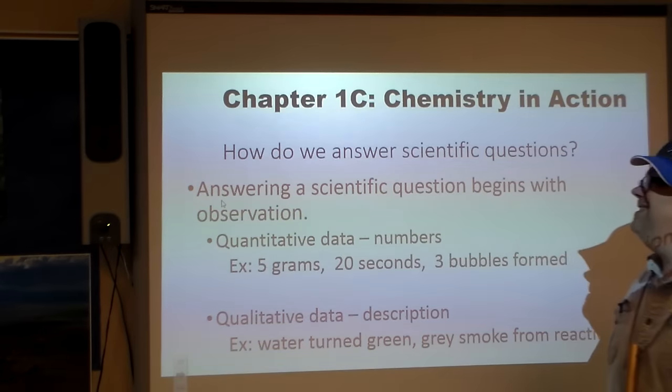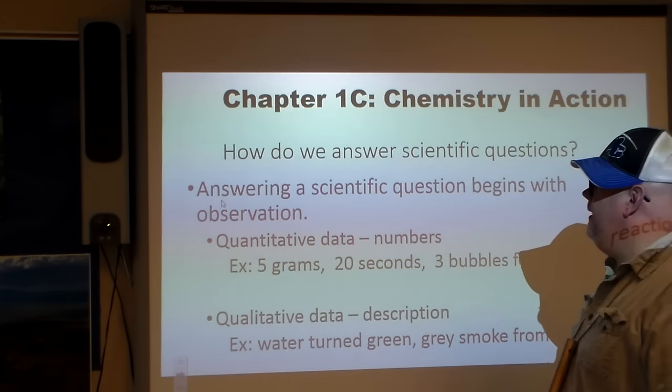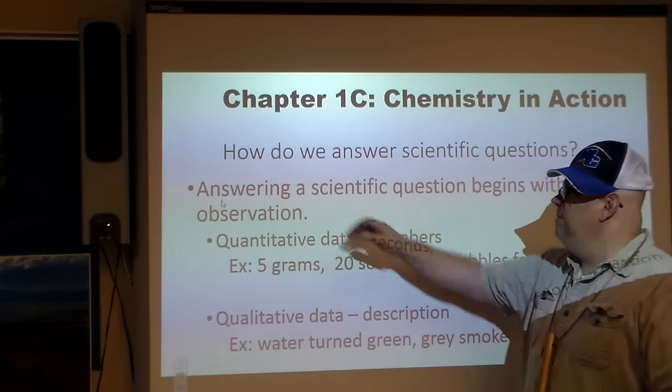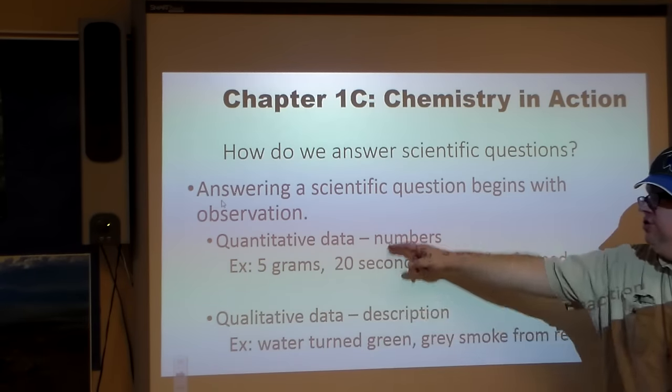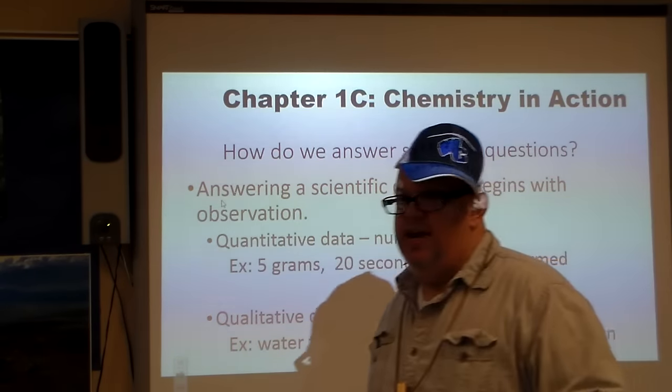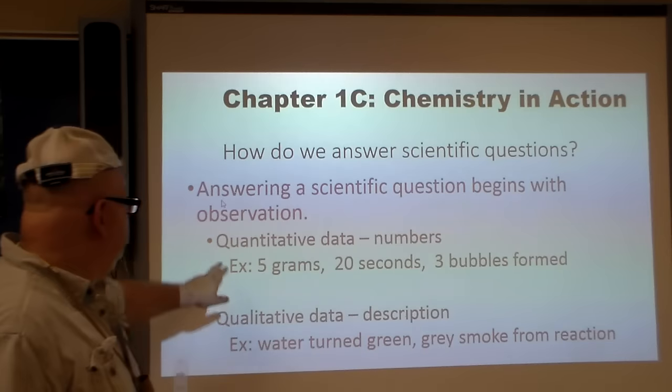When we look at Chapter 1C, we're looking at how do we answer scientific questions. Some of it is going to be dealing with observation - you have to see what's going on. Now there's two kinds of data you can get: numbers data or observational data.